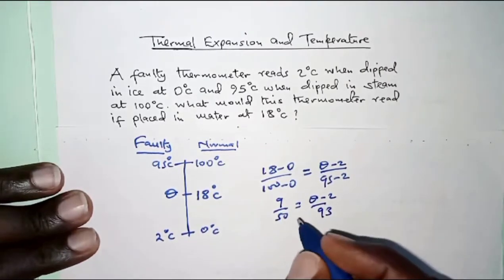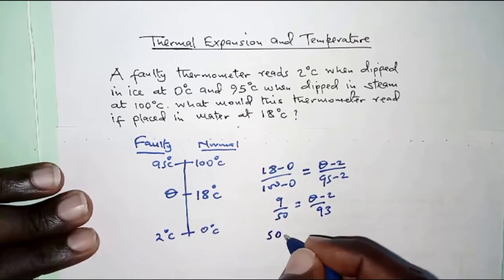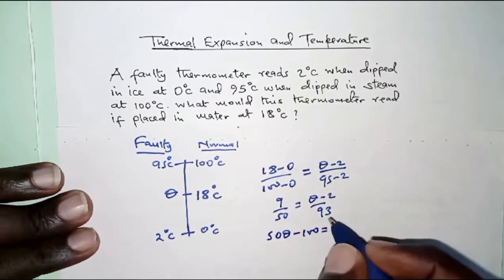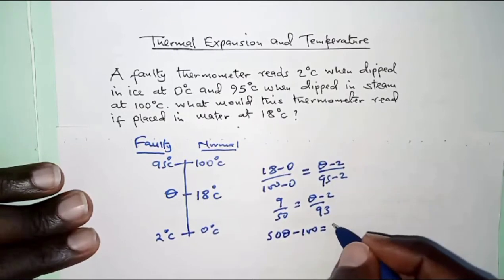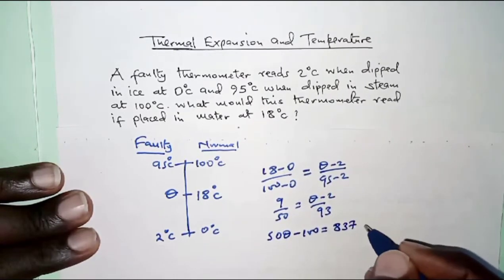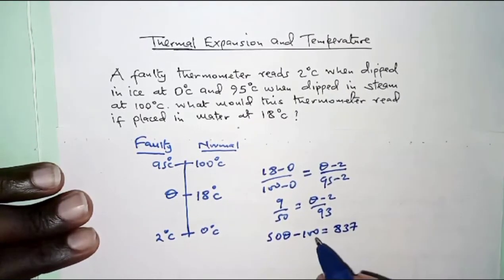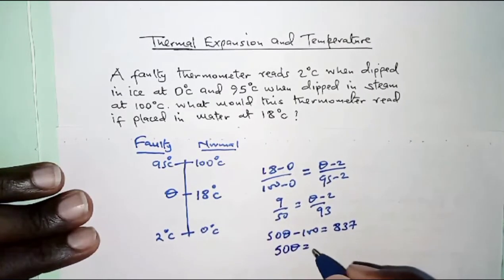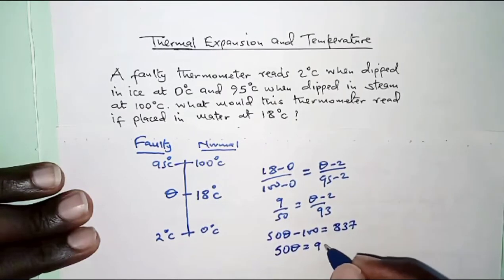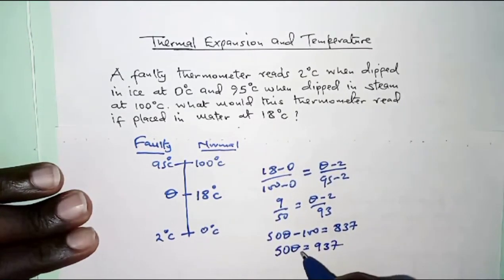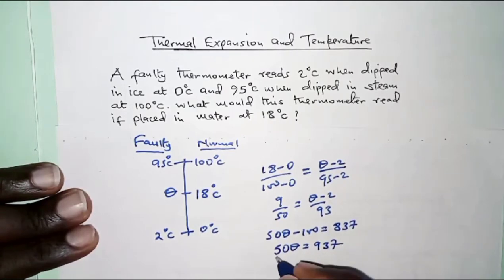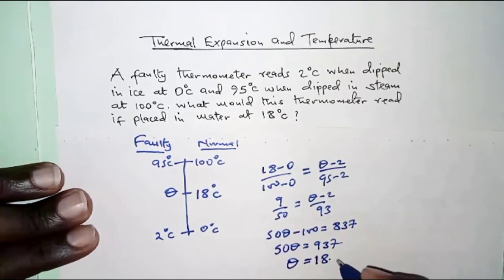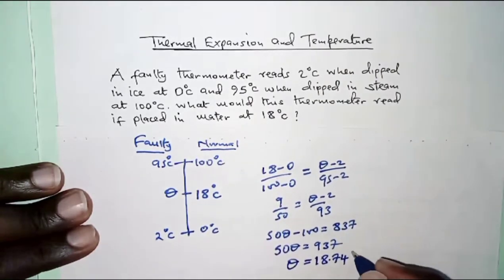Cross multiplying gives us 50 theta minus 100 equals 9 times 93, which is 837. Adding 100 to both sides gives 50 theta equals 937, and dividing both sides by 50, theta equals 18.74 degrees Celsius.